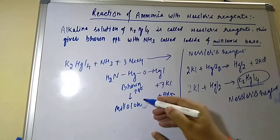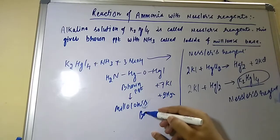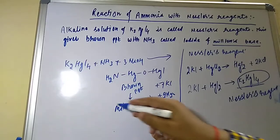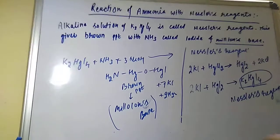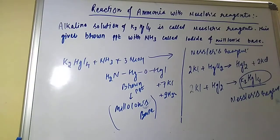So what are we doing? When you are treating the Nessler's reagent with ammonia, it is giving the Millon's base. This is the important component. Millon's base is important for the detection of foods. Thank you so much for watching.